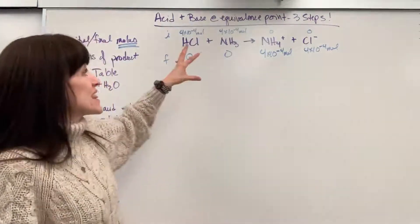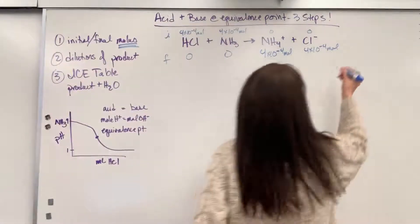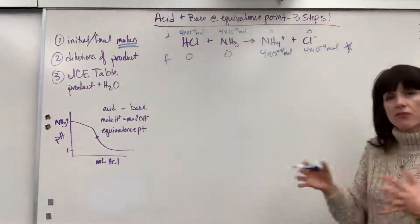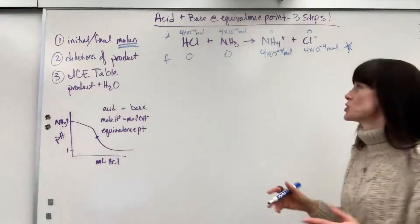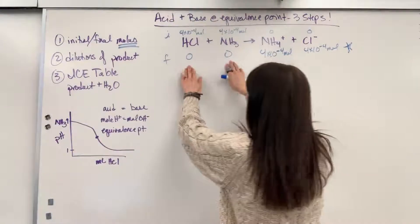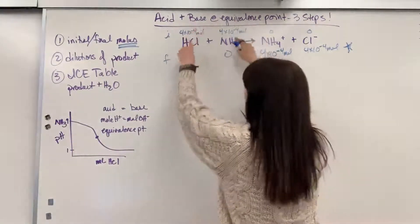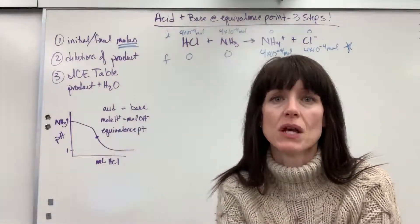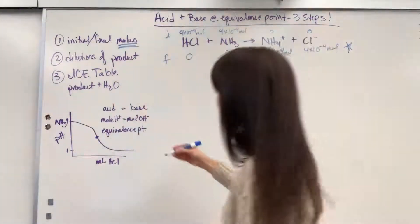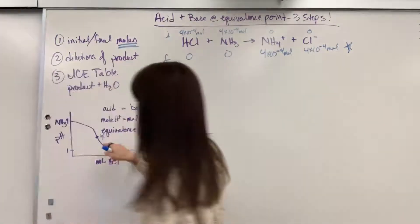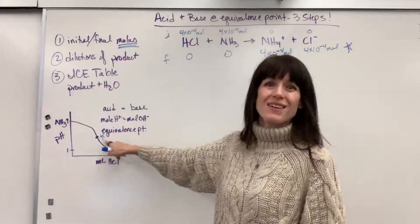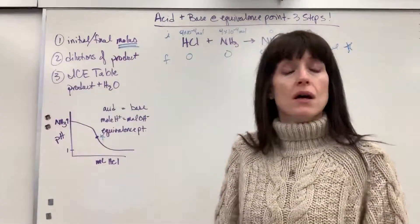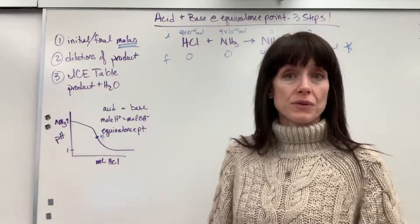Put a star here — this is your clue. If you find yourself in a situation where you have 0, 0 — those moles are identical, completely consumed — it means you're right at the equivalence point. You've got to do the three steps.